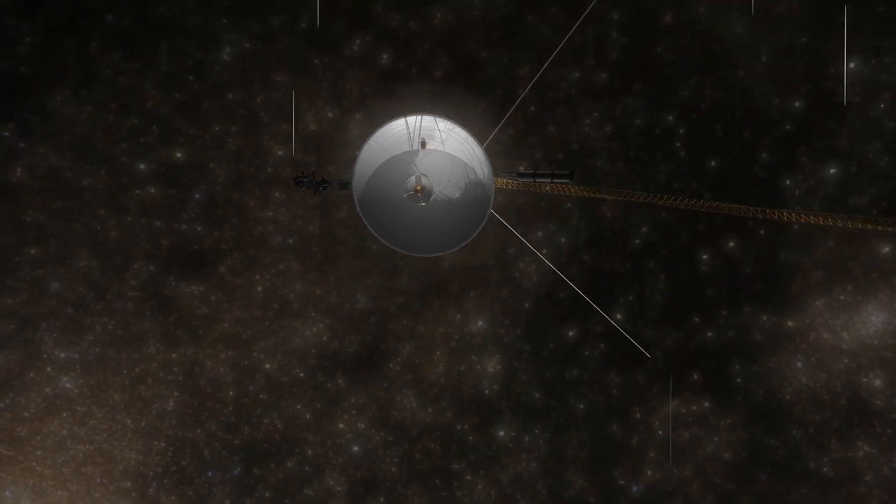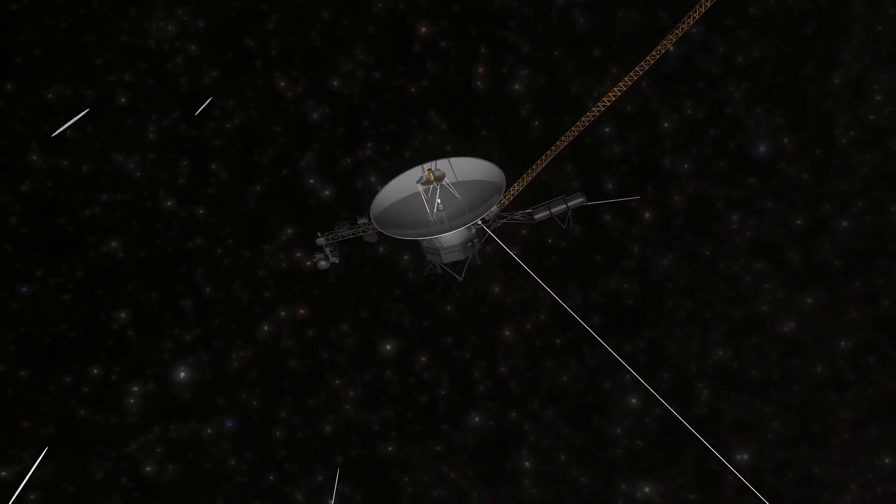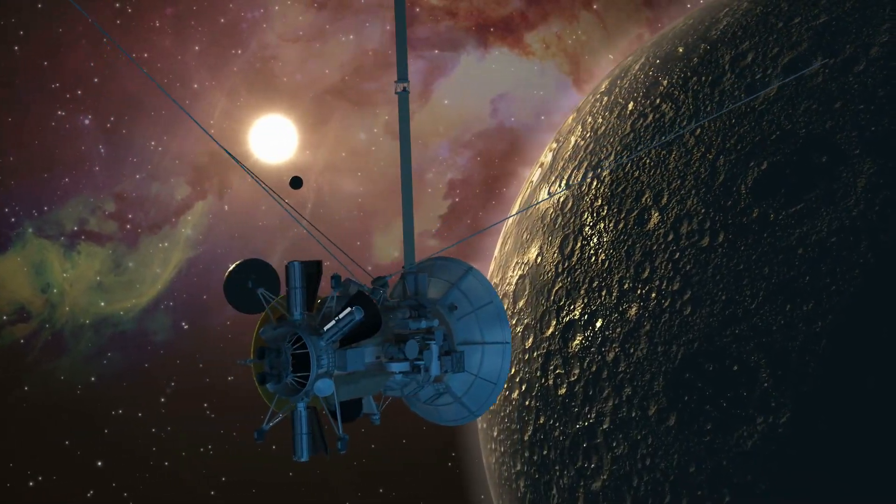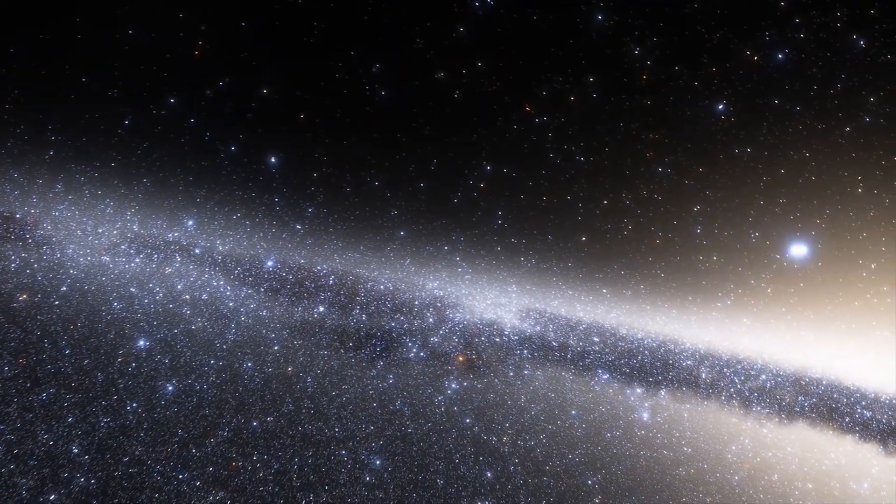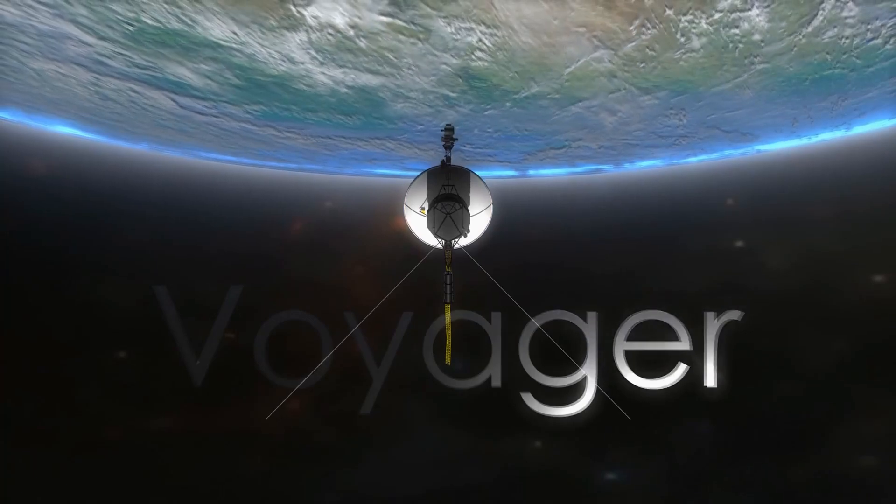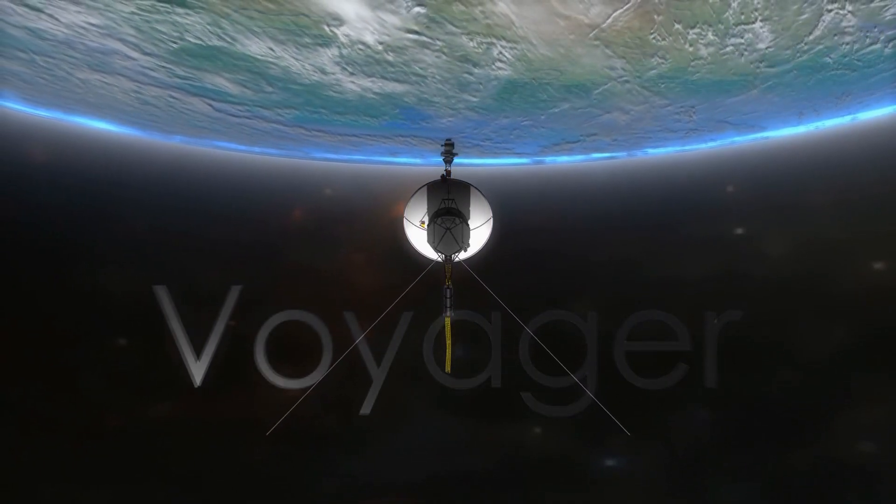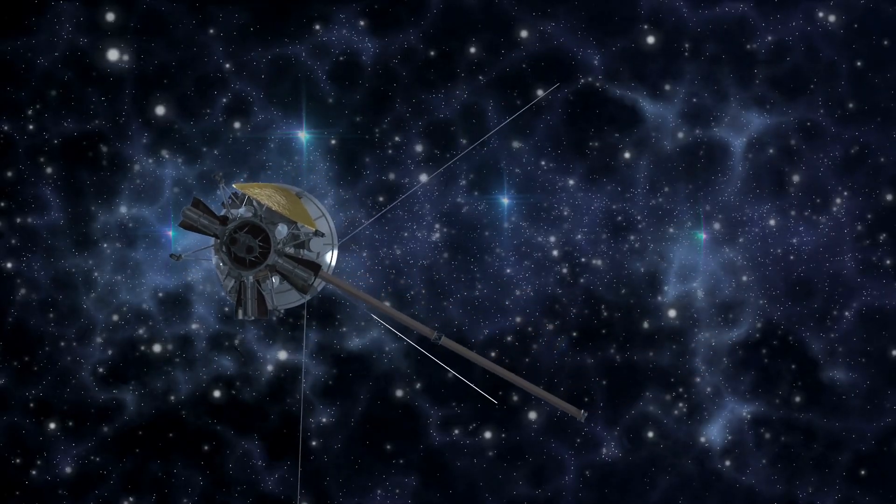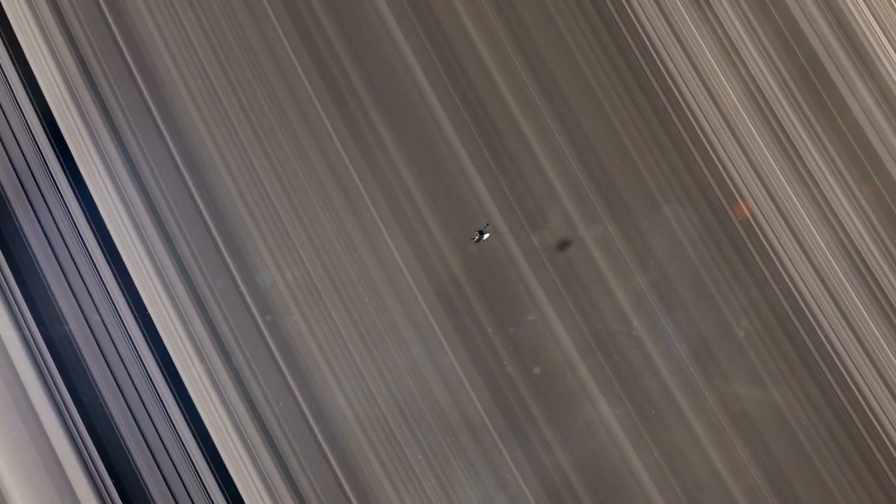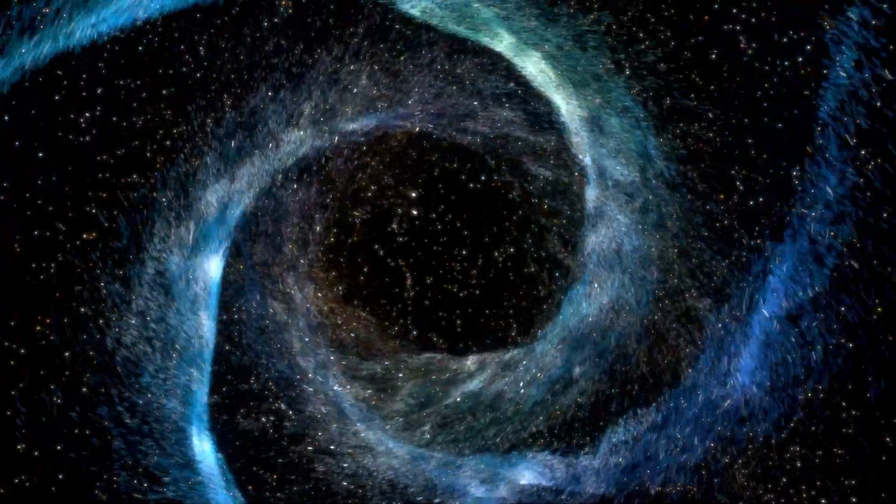NASA launched Voyager 1 more than 40 years ago, and in 2023, it made an unlikely find in the deep, uncharted space between stars. Voyager 1 started sending information about a cosmic event that doesn't fit with what we know now, long after its predicted lifespan had ended.